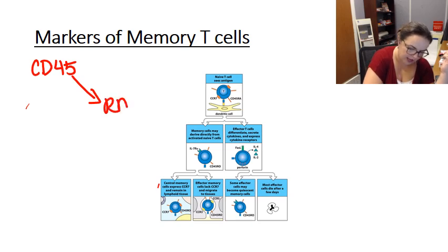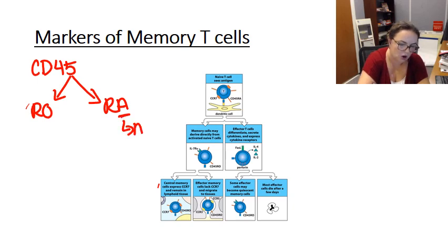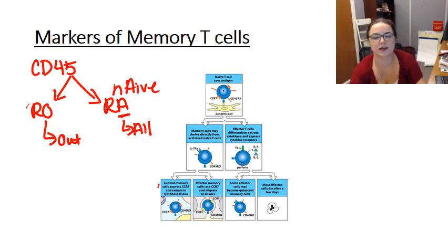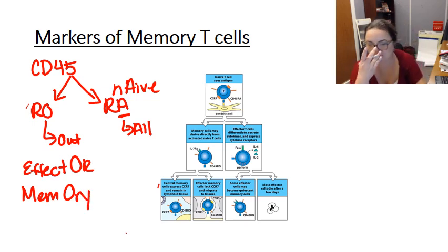So you can have CD45RA or CD45RO. A good way to remember this is that CD45RA has all of its subunits, whereas CD45RO had some cut out. CD45RA is found in naive T cells, whereas CD45RO is found in effector or memory cells. So if it's got CD45RO, it's either a memory cell or an effector cell. If it's a naive cell, it has CD45RA.